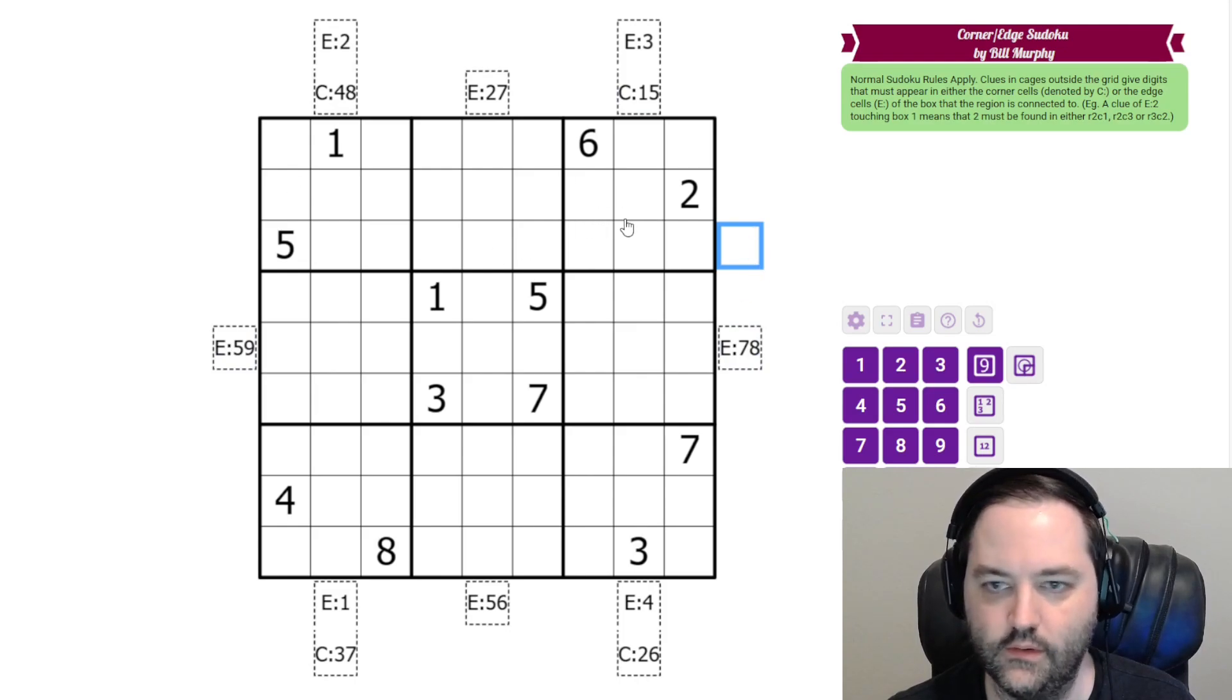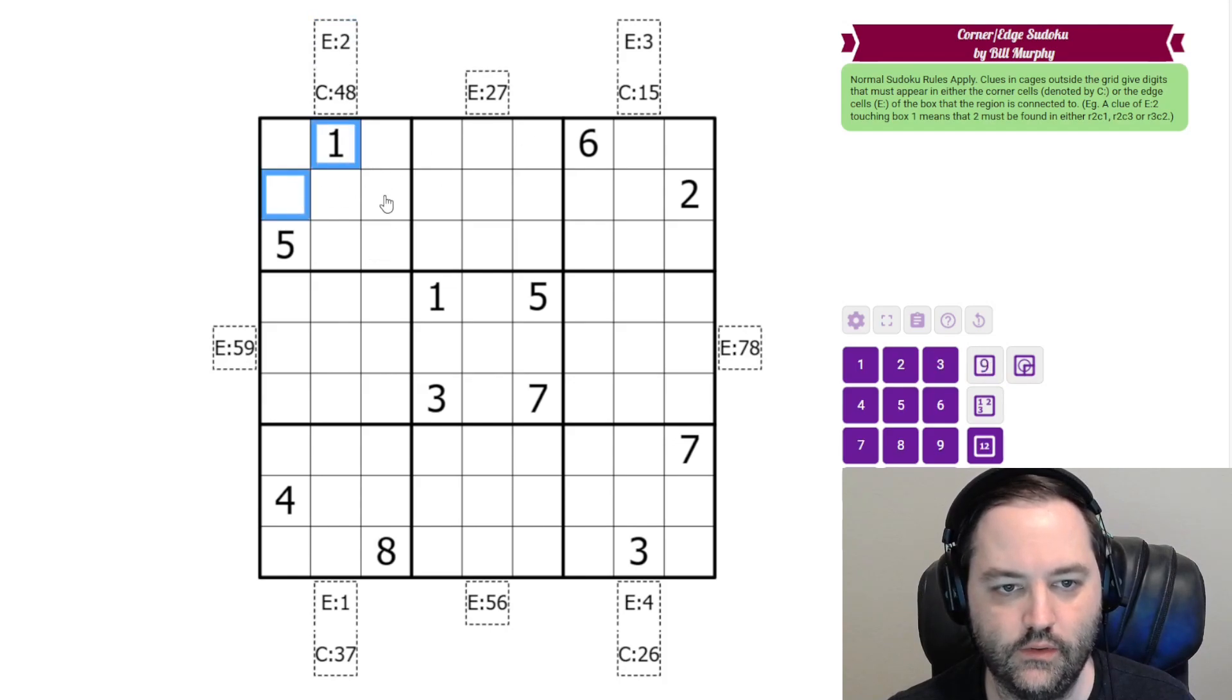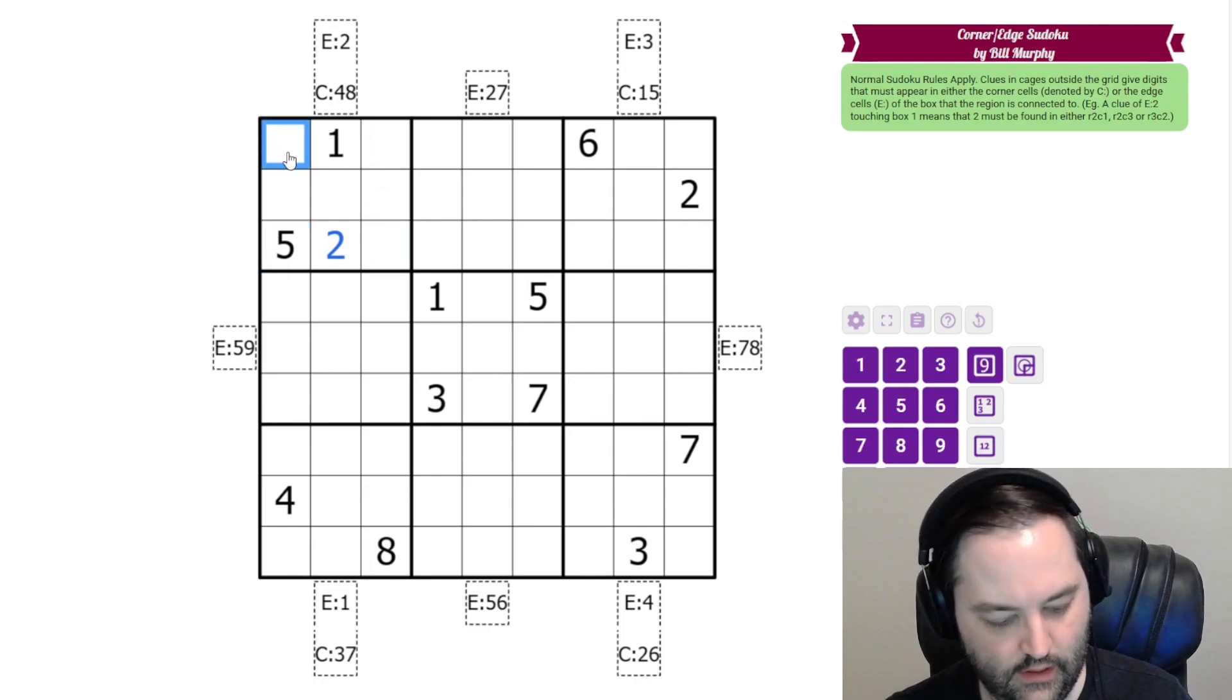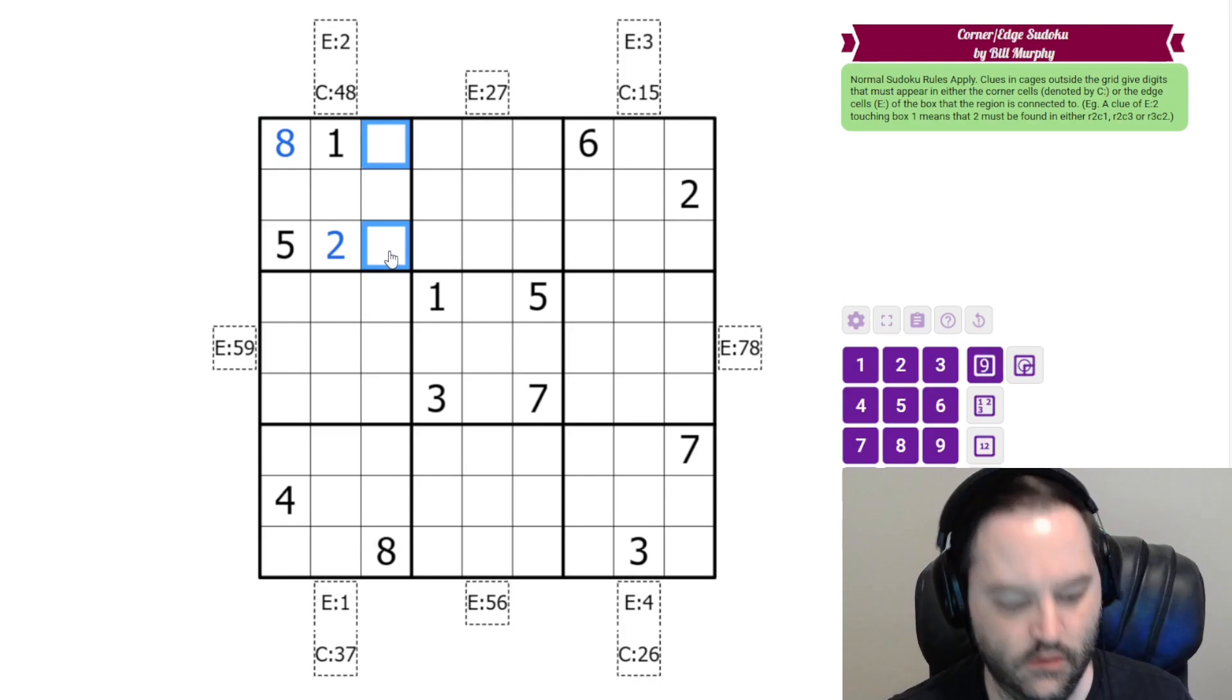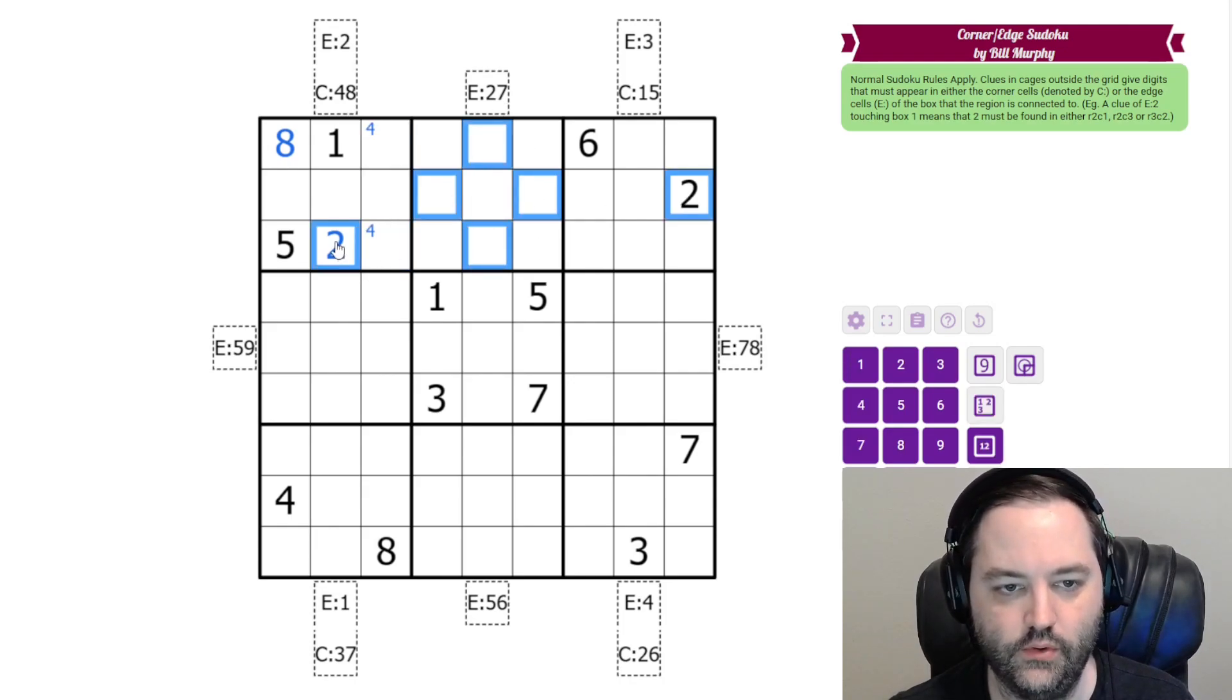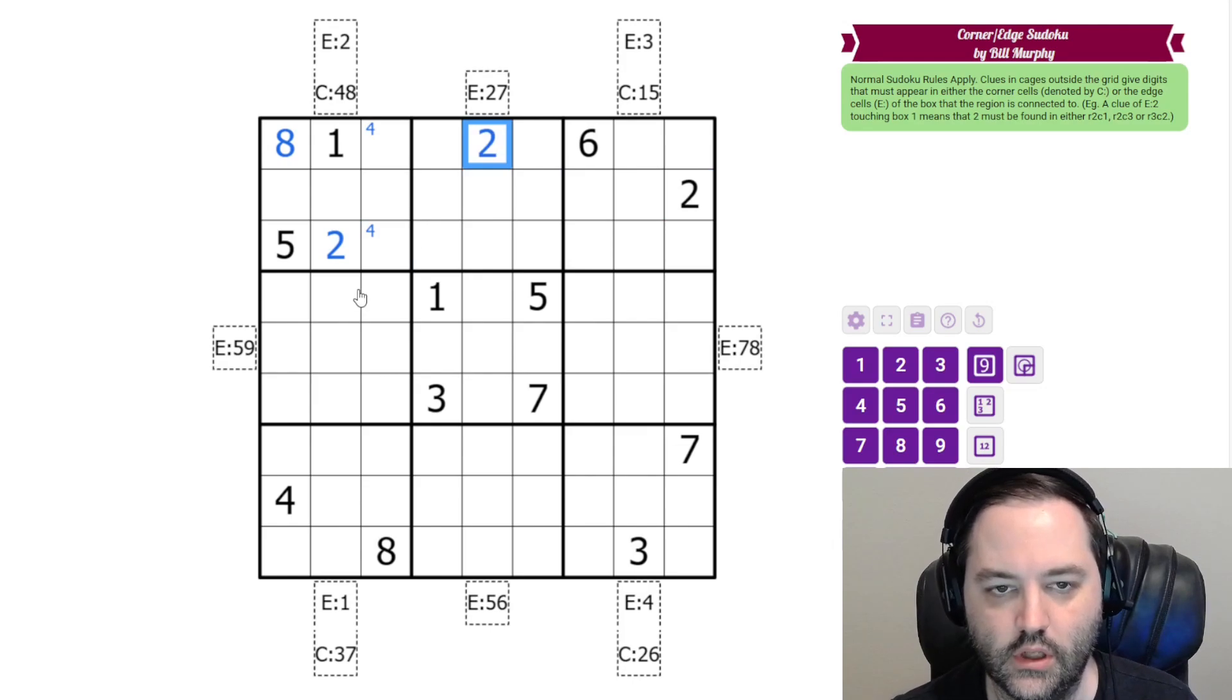So let's get started. We can start with 2 already. These are the edge cells. We have to have 2 in one of them, but there's a 2 over here. So we can place 2 in that cell. For the corner cells, we have an 8 down here, so the 8 must go in that cell. And then we're going to have a 4 in one of those cells. 2 in this box is in an edge cell, but we have 2s looking in. So 2 is in that cell.